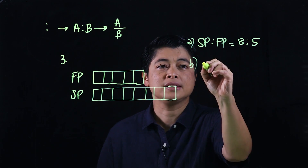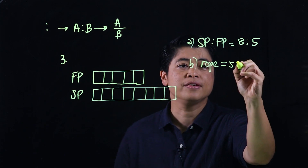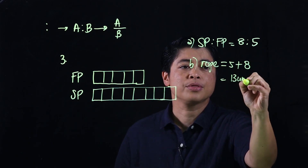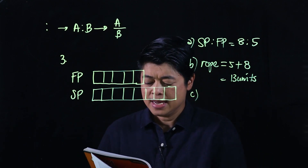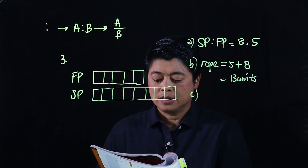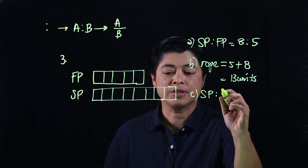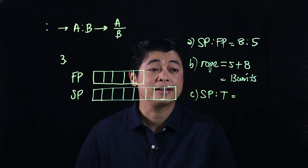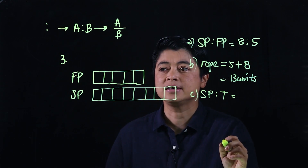In letter b, it asks for the total length of the rope. In terms of units, that equals 5 plus 8, which is 13 units. In letter c, it asks for the ratio of the length of the second piece to the total length of the rope — that is 8 to 13.